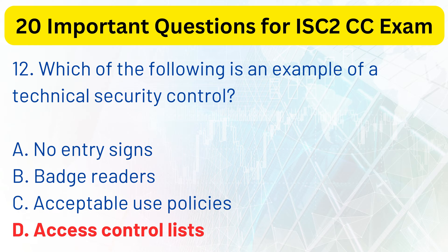Explanation. An access control list is a type of technical security control, while a badge reader and no entry sign are examples of physical security controls. Policies are examples of administrative security controls.